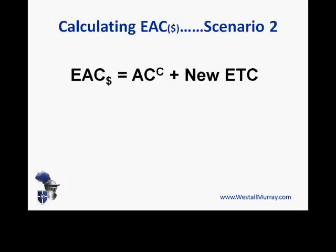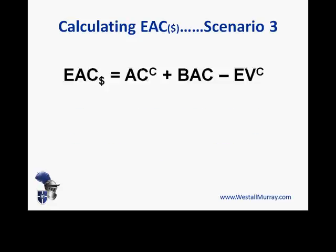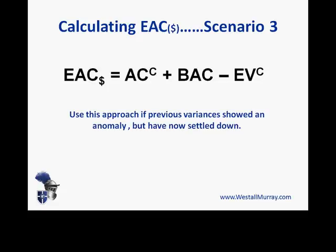A second scenario uses a separate formula in a circumstance where our estimates up until now have proven so bad — either optimistic or pessimistic — that we have no choice but to throw them away and come up with a new estimate for the remainder of the project, then add that to our cumulative actual costs. In other words, we're re-baselining the project. A third scenario applies when there's been a blip — some major anomaly, either higher or lower than expected expense — but everything has now settled down and we expect things to be smoother towards the end of the project. There's that formula shown on screen.